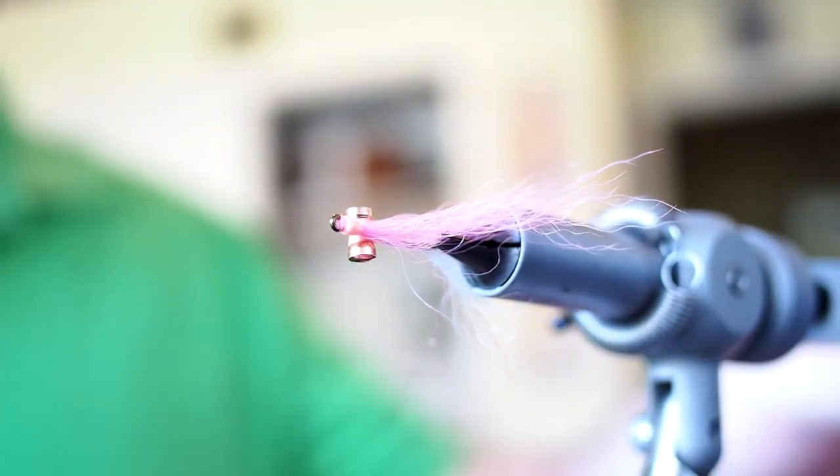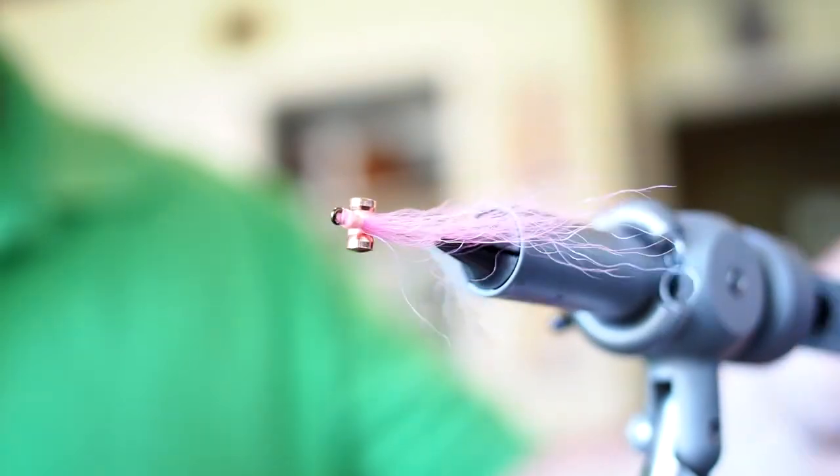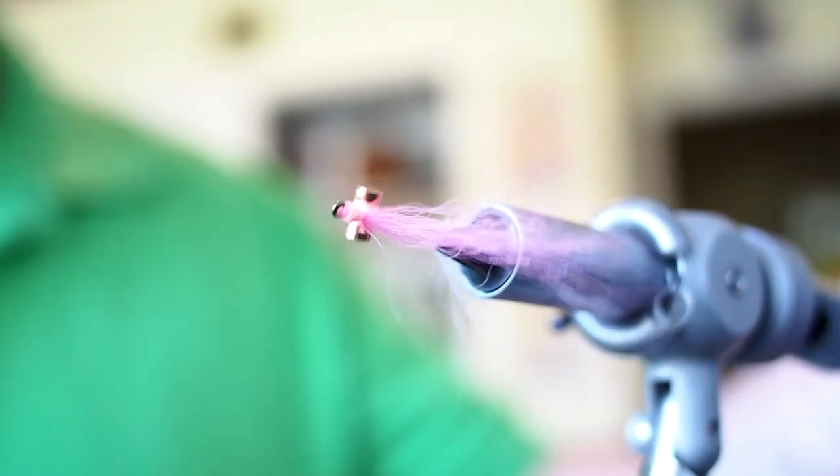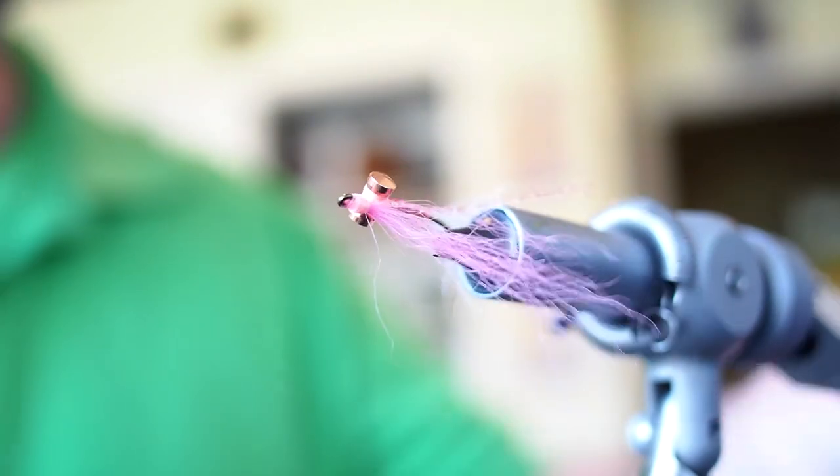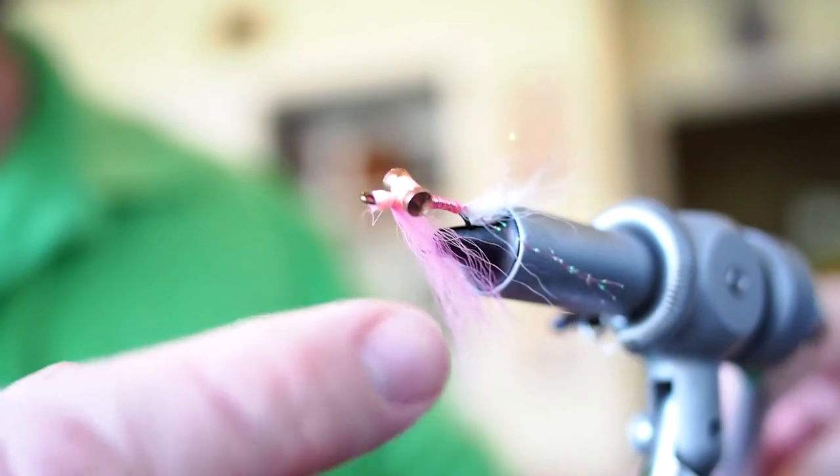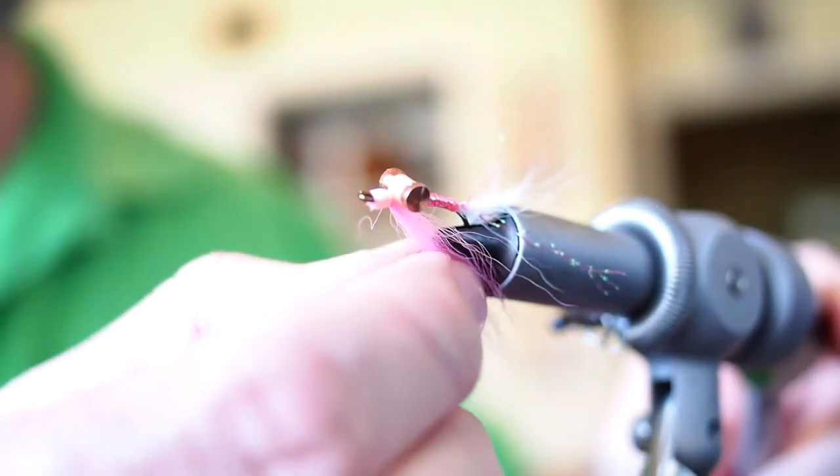And there you have it, that's the kip tail clouser. Kind of a modification of the original clouser minnow, scaled down, a little flash here with the flash throat, geared towards shad.